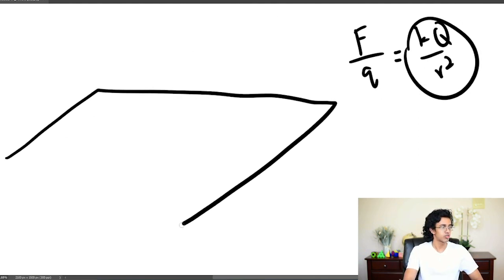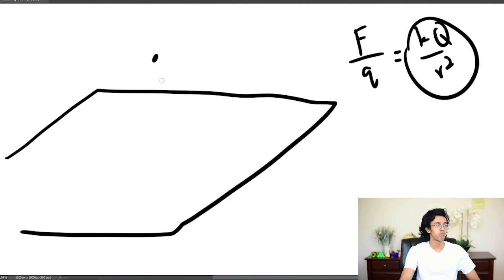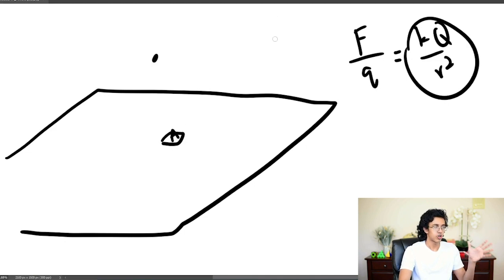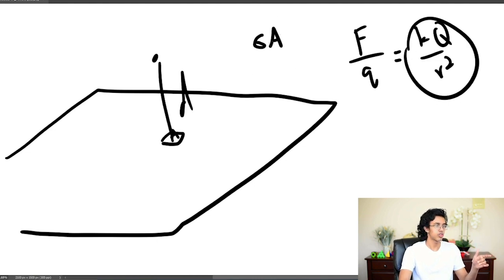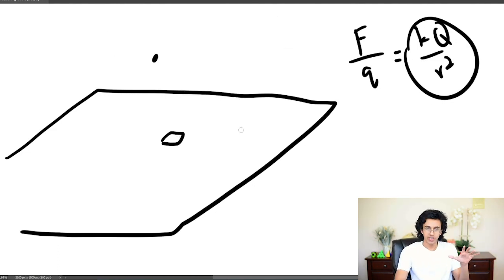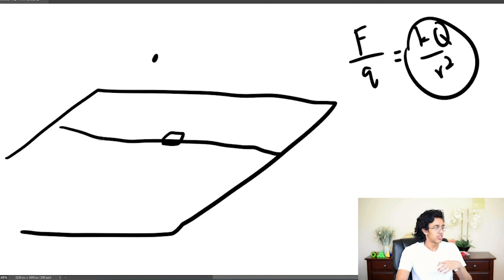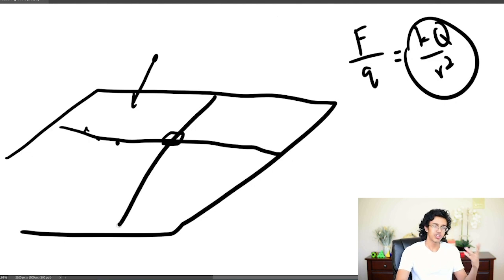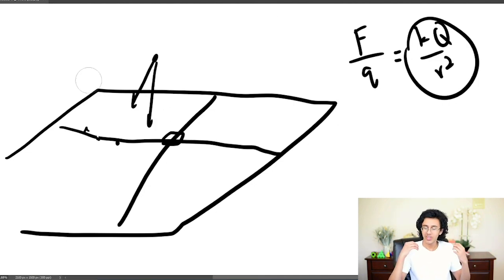Say we have a massively large infinite plane and we want to find the electric field at a point above it. You might be tempted to take a random point on the plane with area A, say the charge is sigma times A, and apply KQ over D squared. But all the other charges across the plane push and pull in different directions, so you have to integrate over the entire infinite plane — a two-dimensional integration accounting for each direction. It's very nasty. But Gauss made this much easier for us.